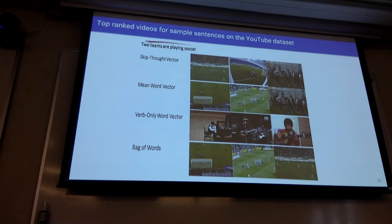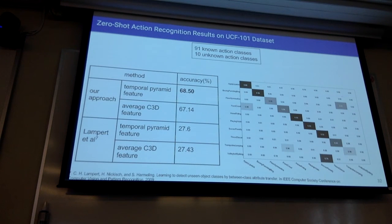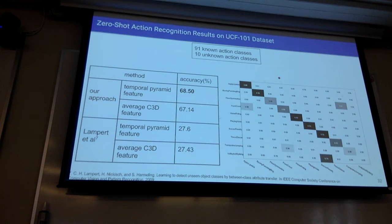In the next experiment, given a query sentence, the system ranks all test videos by relevance. Skip-thought vector with temporal pyramid feature gives the best result here as well. For the query 'two teams are playing soccer,' the top-ranked videos are mostly relevant. Finally, for zero-shot action recognition on UCF101 with 91 known and 10 unknown action classes, since we only have phrases rather than full sentences, we couldn't use skip-thought vectors and used mean word vectors instead, getting better results than all baselines.